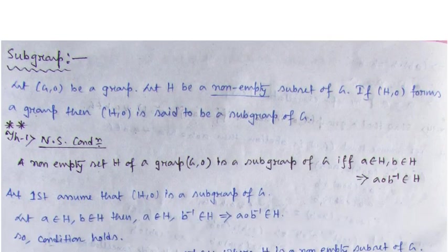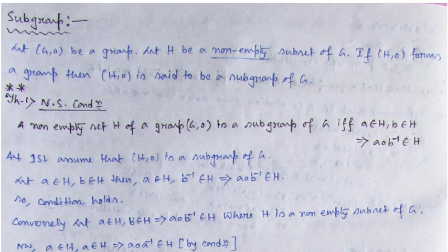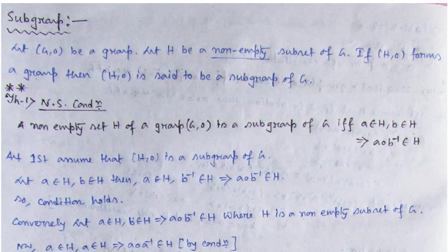Subgroup kise kahenge? Subgroup is nothing but — suppose we have a group G. Be any group and we are taking a subset of the set capital G. The subset must be a non-empty set. Then that subset capital H is said to be a subgroup of the group G if H forms a group. That means the non-empty subset we choose from the group, under the same composition defined on G, H must also form a group separately. So H, which is a subset of G and forms a group, is called a subgroup.